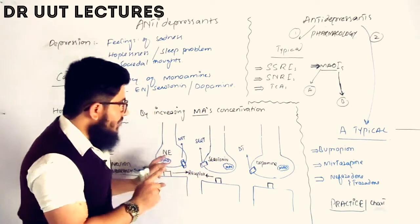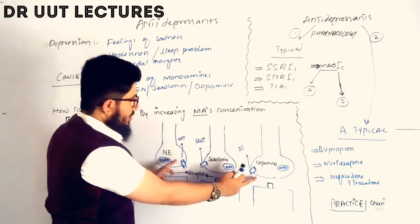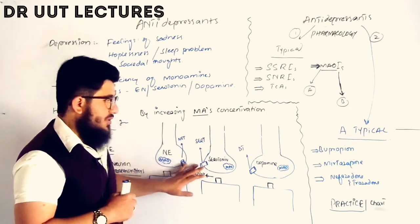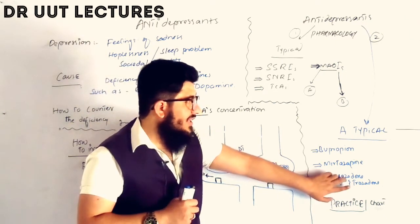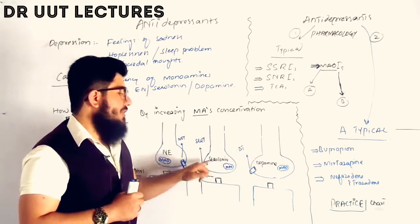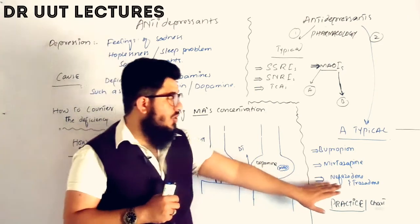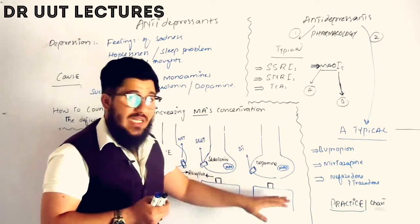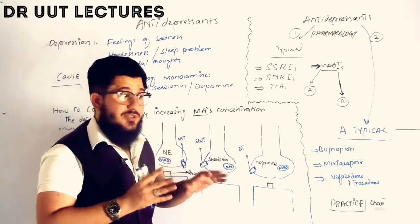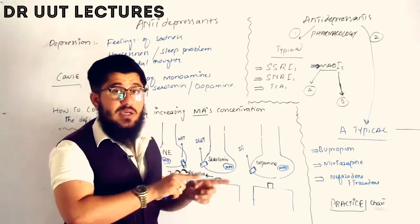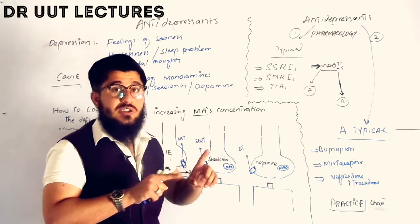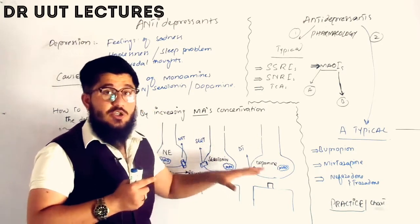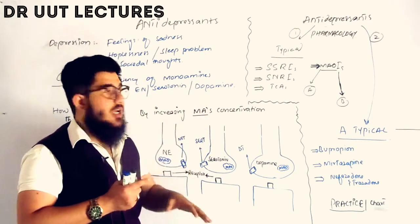Bupropion acts on the norepinephrine and dopamine transporters. Mirtazapine works on the norepinephrine and serotonin transporters. Nefazodone and trazodone inhibit the serotonin transporter. When these transporters are blocked, neurotransmitters released into the synapse are not reuptaken, increasing their concentration in the synapse. This results in a decrease in depression, because depression involves deficiency of monoamines, and these medications help increase monoamine levels.